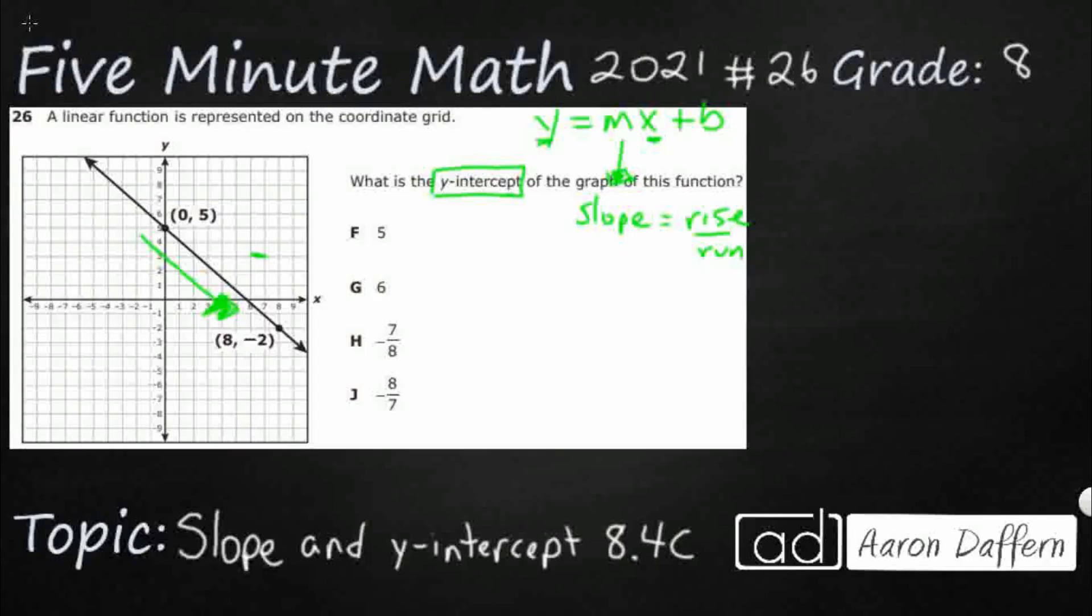Well, we can calculate that by looking at the change in y over the change in x. It means you take two y-coordinates, subtract them. You take two x-coordinates, subtract them, put them in the numerator and denominator respectively, and you can figure out your slope. You can calculate it. So I'm going to use this right here as my y2 right here and my x2. I'm going to use this right here as my y1 and my x1. If you did it opposite, you'd still get the exact same answer.